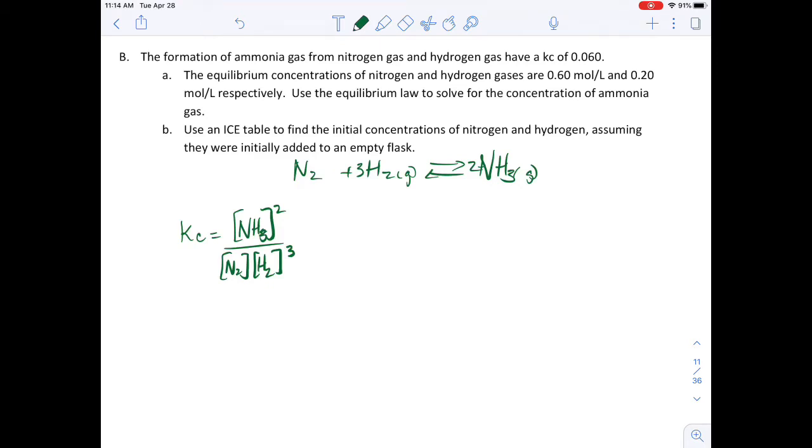So I'm going to use the equilibrium law expression here, and I want to solve for the nitrogen gas. So what I'm going to get is I've got 0.060 as my Kc. I want to find x squared—I'm going to say that that's my ammonia—and then I'm going to have the nitrogen concentration is 0.60 mole per liter.